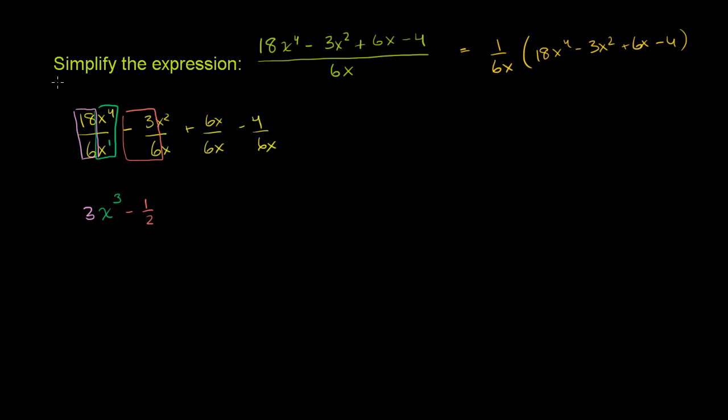And then you have x squared divided by x. We already know that x is the same thing as x to the first. So that's going to be x to the 2 minus 1 power, which is just 1, or I could just leave it as an x right there.